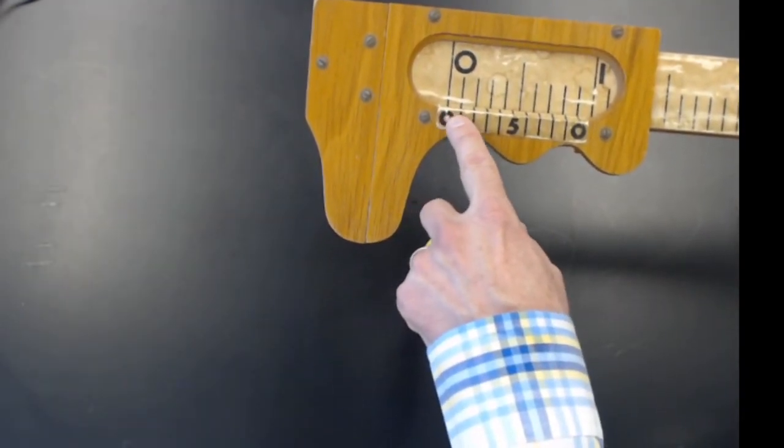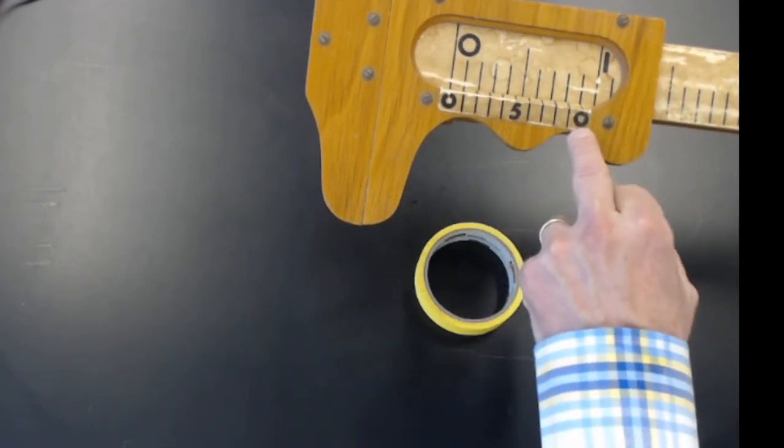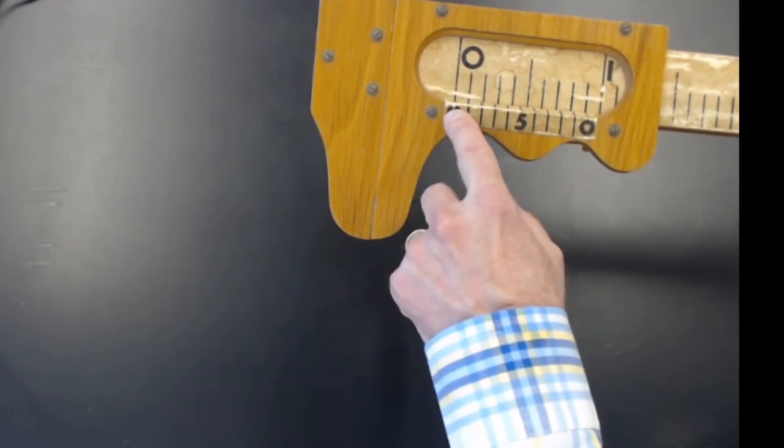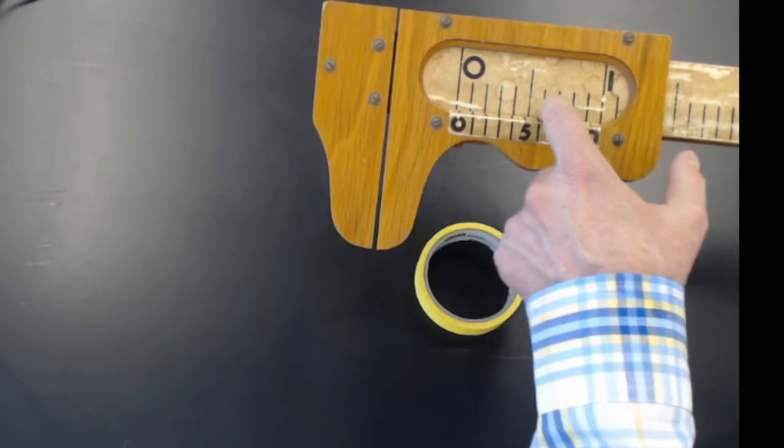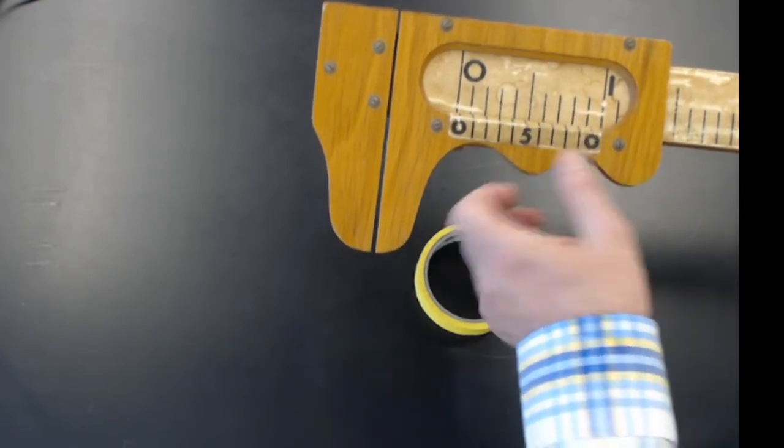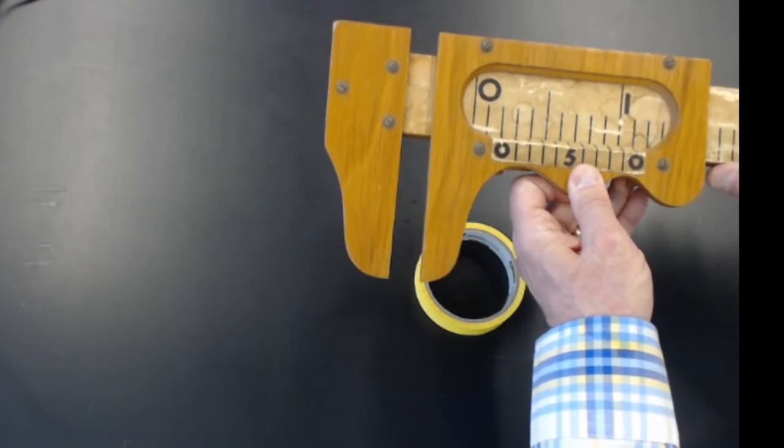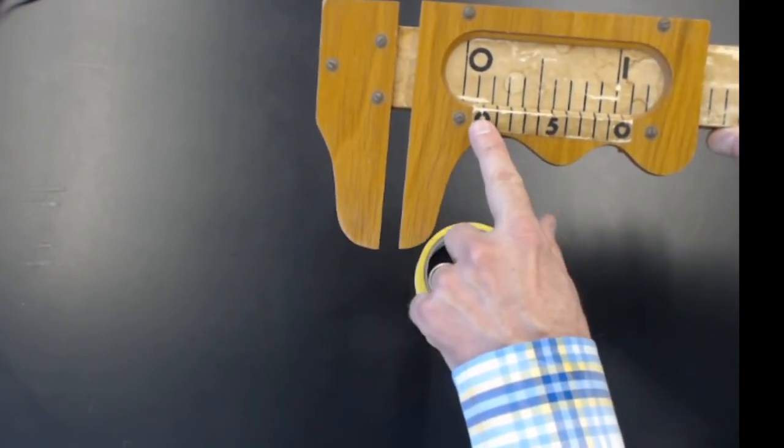What he realized is that if you make nine marks instead of ten evenly spaced, then you use the first zero mark to get closest to one of these marks along the top. Then you want to estimate the interpolation between here, and what you do is go along